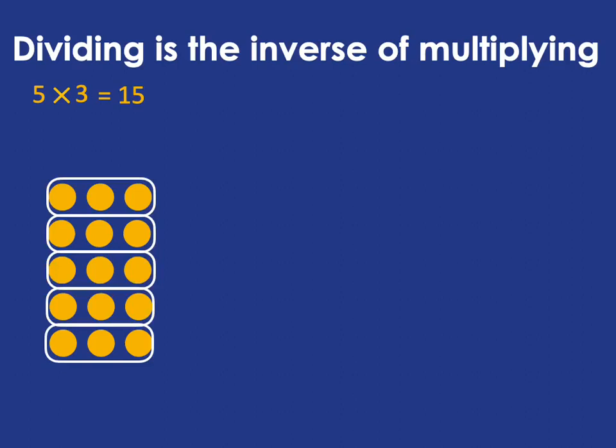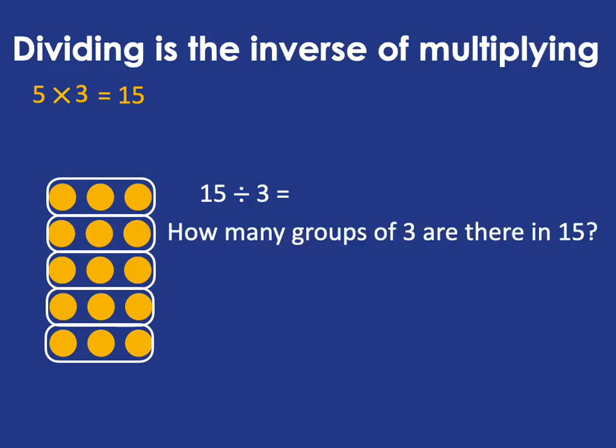Now if we ask ourselves what's 15 divided by 3, we are asking ourselves how many groups of 3 are there in 15 and we can see that there are 5 groups of 3 in 15.